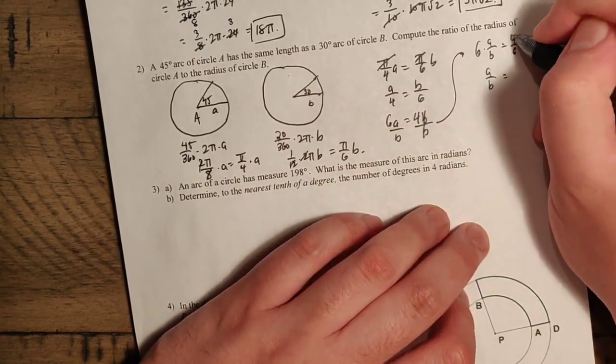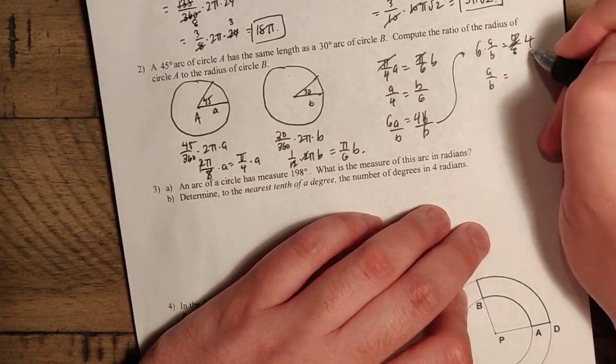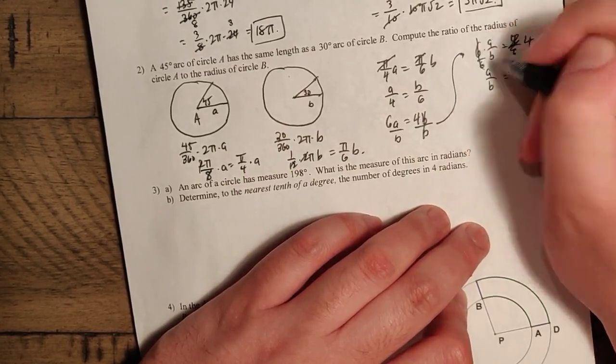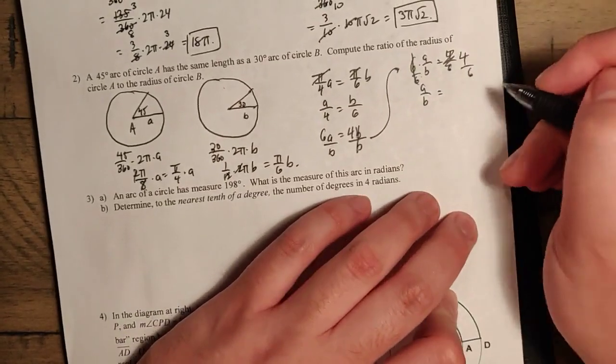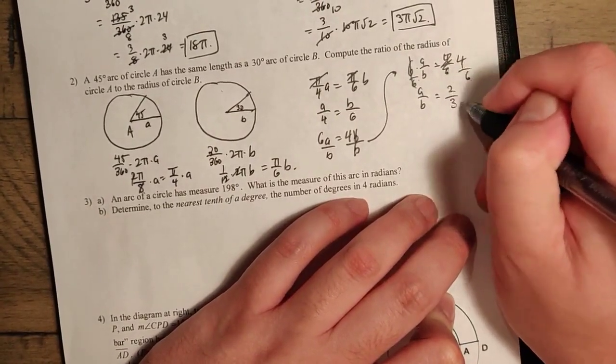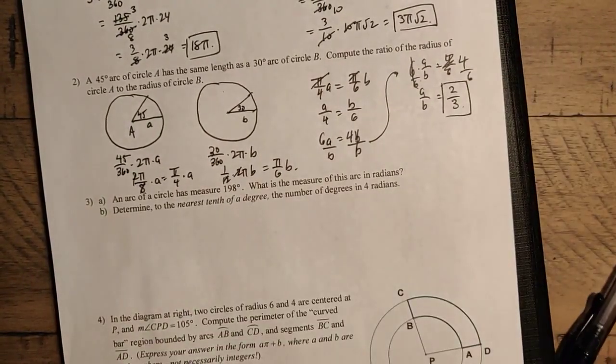And then we can divide both sides by 6. Now we can divide by 6. Divide by 6. That goes away. And we're left with finally A over B being equal to 2 over 3. So this is going to be our ratio.